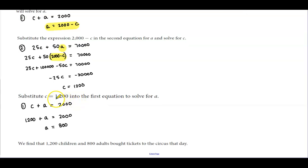Now we're going to substitute 1,200 for C into the first equation to solve for A. Plugging in 1,200 for C and subtracting both sides, we get A = 800. We find that 1,200 children and 800 adults bought tickets to the circus that day.